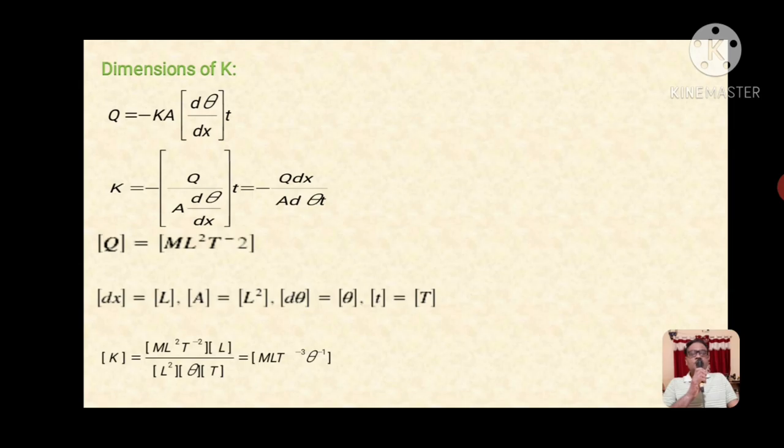Combining all these dimensions, we finally get the dimension for K equals ML² T⁻² times L upon L² times theta times T, which equals MLT⁻³ theta⁻¹.